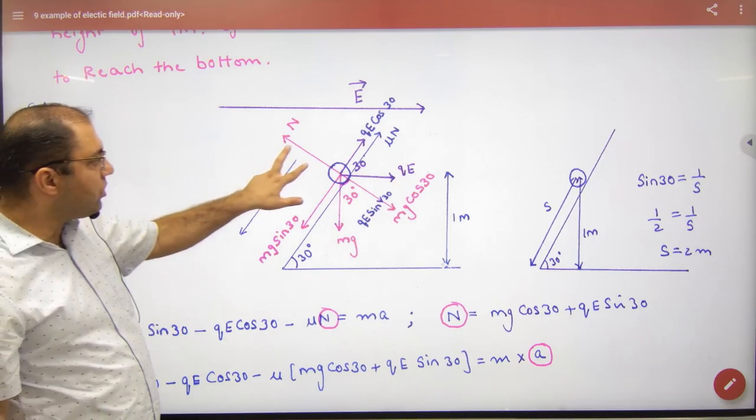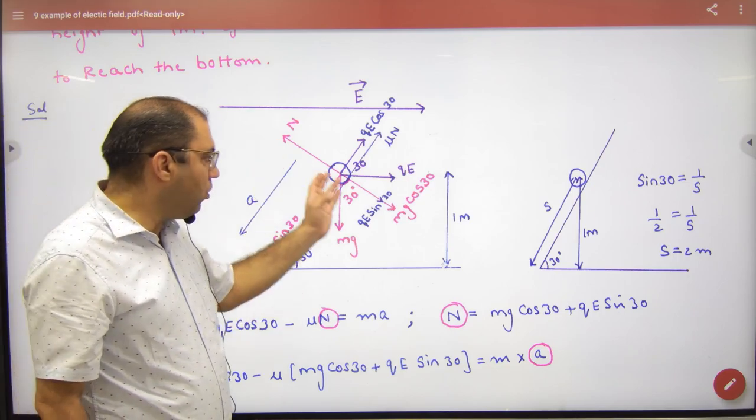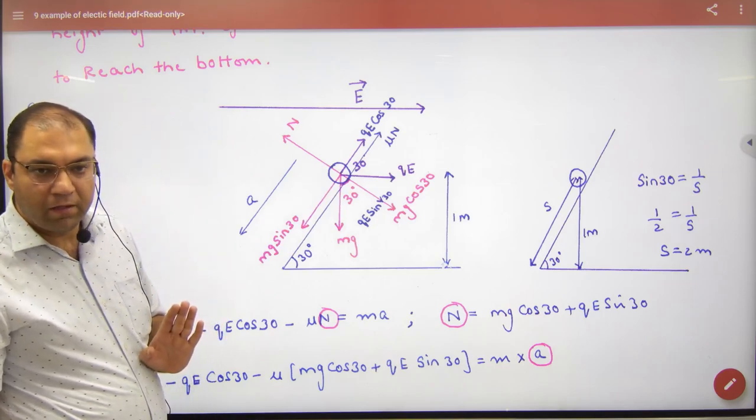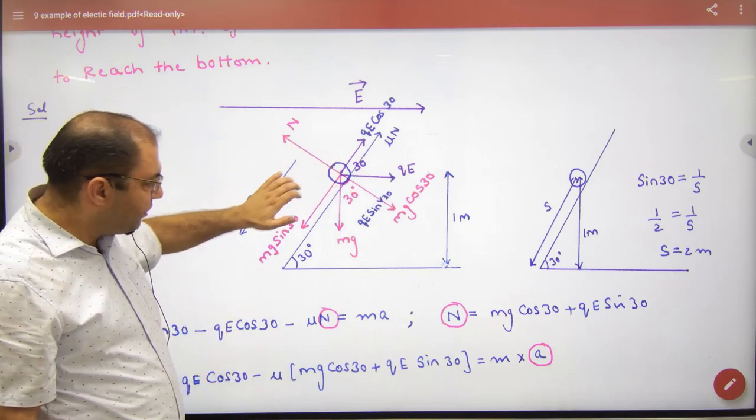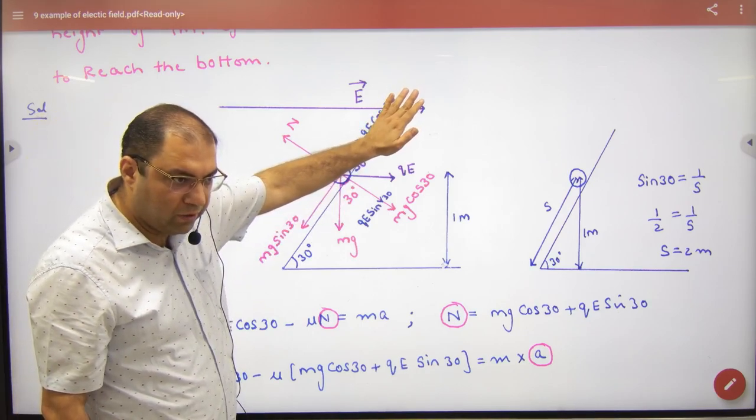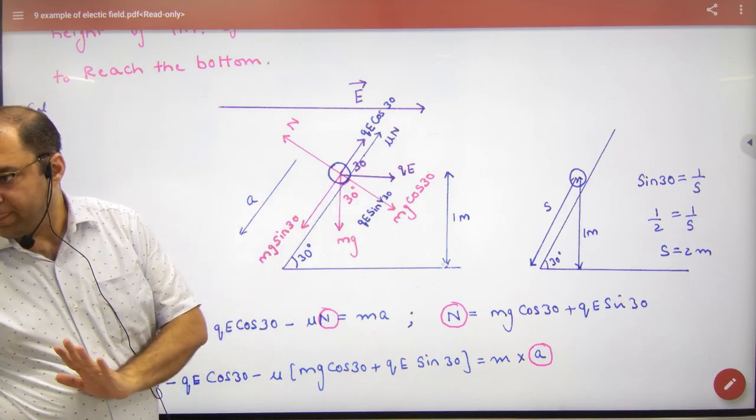Normal reaction will come N upward. Any doubt? Then Mg cos 30, Mg sin 30, normal reaction. Next, friction. This body is going where? Down. Then friction will act backward, upward. How much? Mu times N. This is also clear.